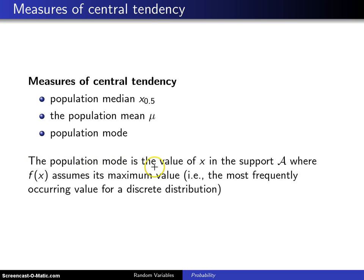The population mode is the value of x in the support of script A, where f assumes its maximum value. For example, the most frequently occurring value for a discrete distribution.